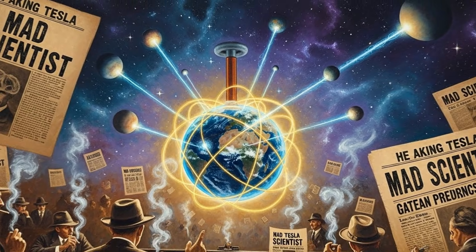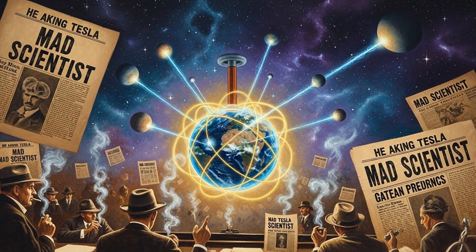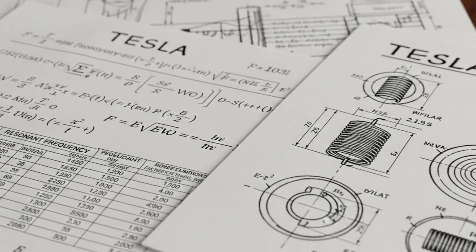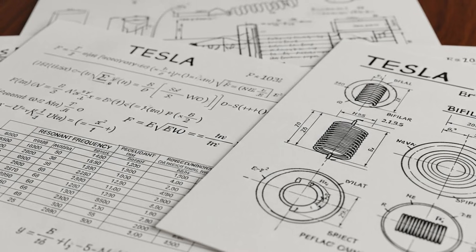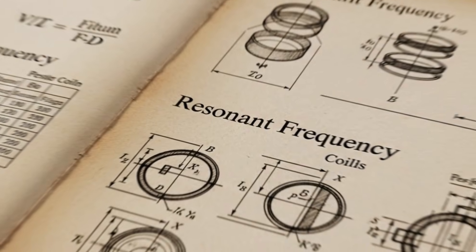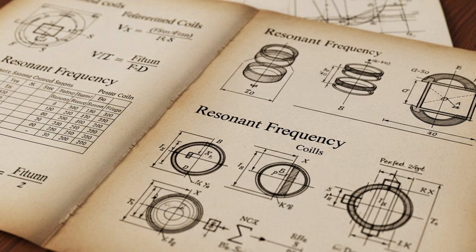In his final years, he spoke of inventions that sounded like science fiction. A death ray that could stop wars, wireless energy transmission across the globe, communication with beings on other planets. The press called him a mad scientist. Even his admirers weren't sure where genius ended and delusion began. But here's what we know for certain. Tesla wasn't guessing. He was calculating.